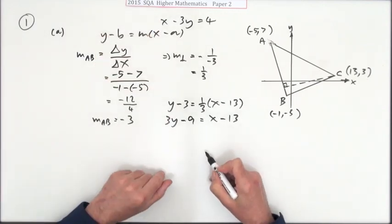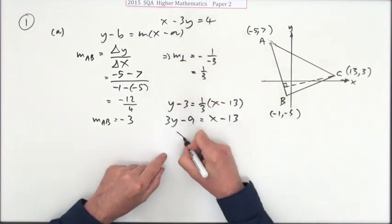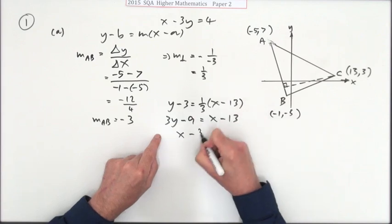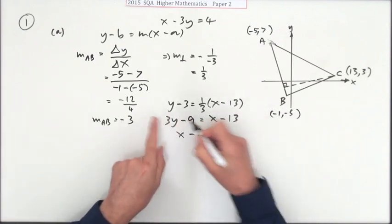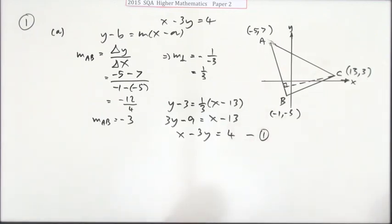Then you want it in this form. You take that across, it's just going to turn into that. So x minus 3y, reading it backwards, 13 minus the 9 is 4. And there you are. You know you're going to use it again so I'll call that equation 1.